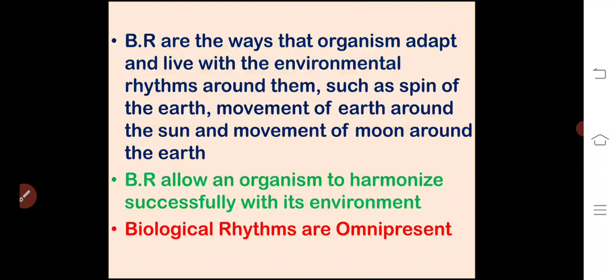Biological rhythms are ways that organisms adapt and live with the environmental rhythms around them, such as the spin of the earth, movement of the earth around the sun, and movement of the moon around the earth. Biological rhythms allow an organism to harmonize successfully with its environment. Every organism has biological rhythms.